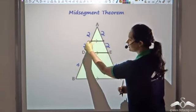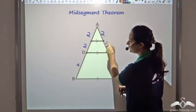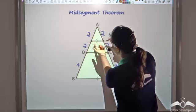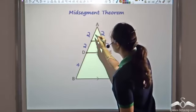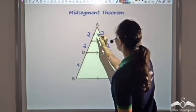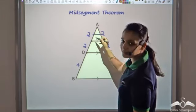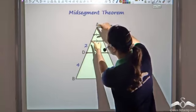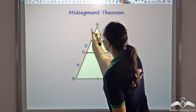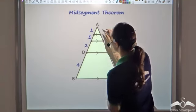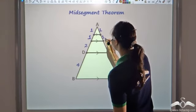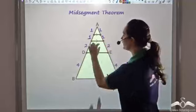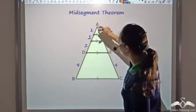Since it's a mid-segment joining the midpoints, this segment is parallel to the third side, giving a parallel line with length 2. Further, I can take midpoints of this small triangle on the top as well. Joining those midpoints gives another mid-segment. Since the sides were 2, taking midpoints again gives 1 and 1 on each side. So by repeatedly applying the mid-segment theorem, I get a side of the smallest triangle.